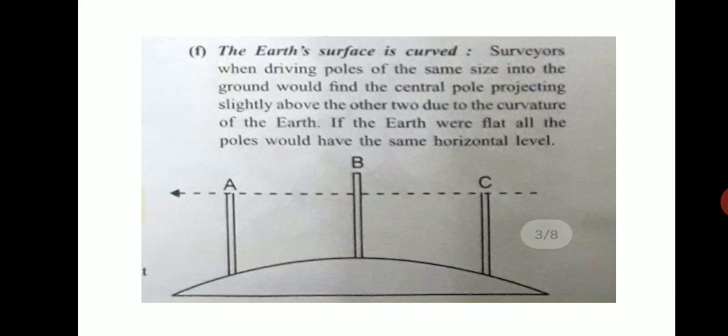The Earth's surface is curved. Surveyors took three poles of the same size and placed them at the same distance and tried to see each other, from A to B to C. They were not able to see A from C because B was a little bit higher. This also proves that Earth is spherical. If Earth is flat, they would be able to see the top of each pole.